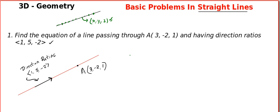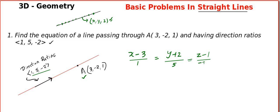Please write: the Cartesian form is x minus x1. The minimum requirements are one point and the direction vector or the direction ratios. The direction vector will be i plus 5j minus 2k. So the answer goes like: x minus 3 divided by 1 equals y minus (minus 2) divided by 5 equals z minus 1 divided by minus 2 equals some variable. This is the Cartesian equation, also called the symmetric form.